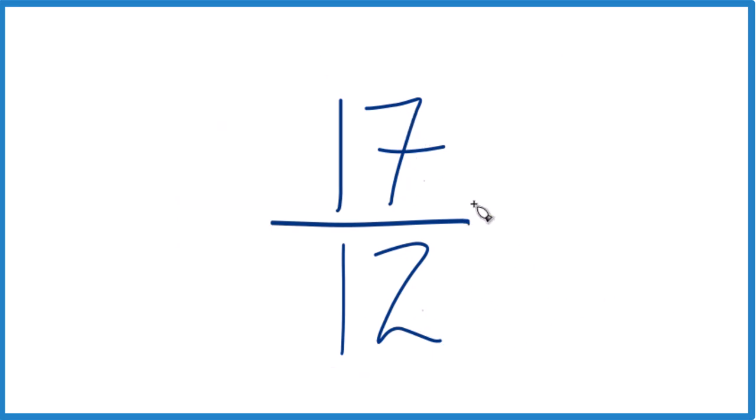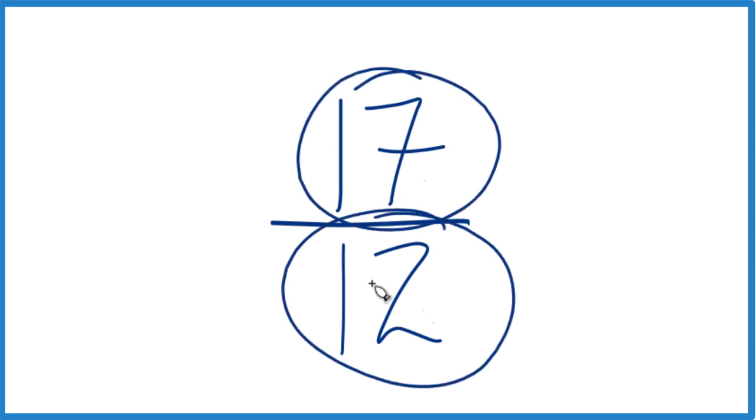So 17 twelfths, we want to find a factor, a common factor. That's a whole number that goes into 17 and 12 evenly. The thing is, the only number that's going to go into both 17 and 12 evenly is 1.